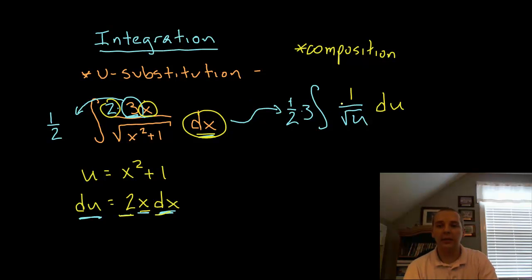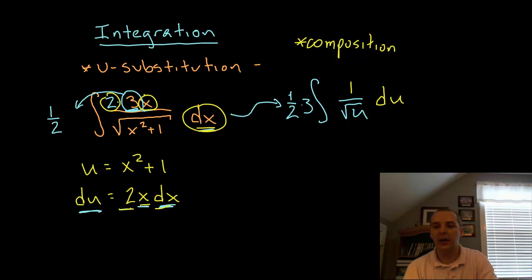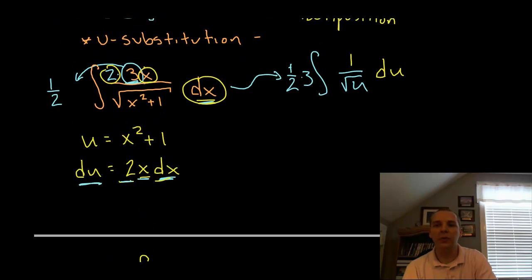So now when you look at this integral, that's much much simpler than the way this original integral looked. So let's integrate this guy. We'll have 3 halves, that's 3 times a half, times the integral of 1 over the square root of u.